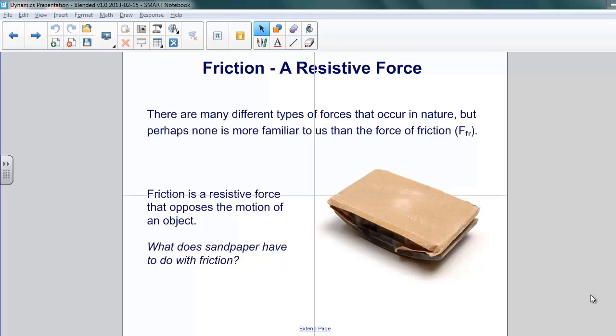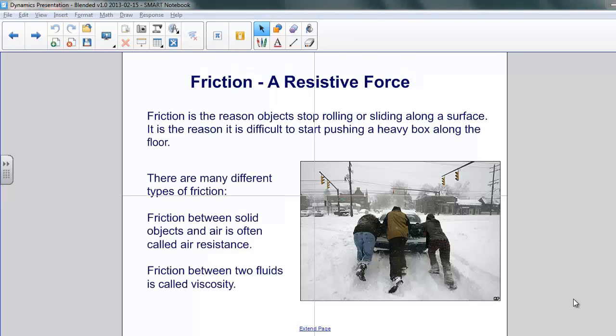What does sandpaper have to do with friction? Well, the very roughness of the surface gives us some insight into what causes friction. There are a number of different resistive forces in nature. Friction is one of the more familiar of these. It's the reason objects stop rolling or sliding along the surface. It's the reason it's difficult to start pushing a heavy box along the floor.